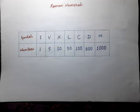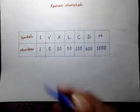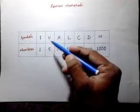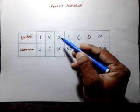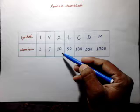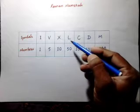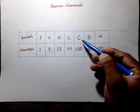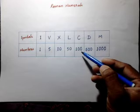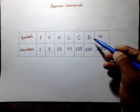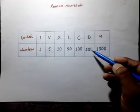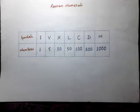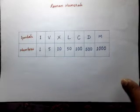The symbol I is equal to 1, V is equal to 5, X is equal to 10, L is equal to 50, C is equal to 100, D is equal to 500, and M is equal to 1000.